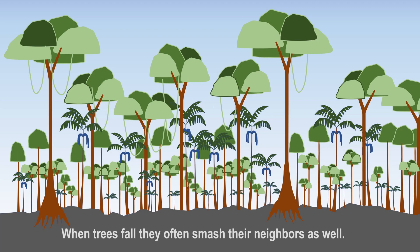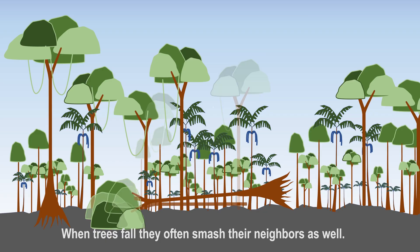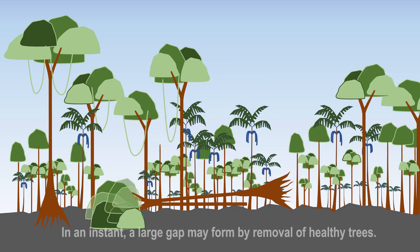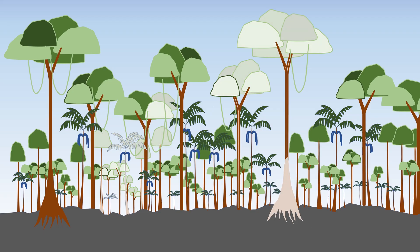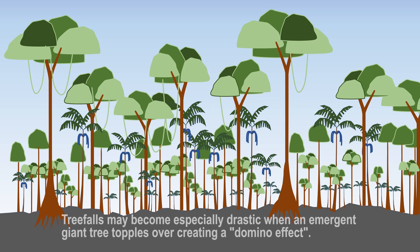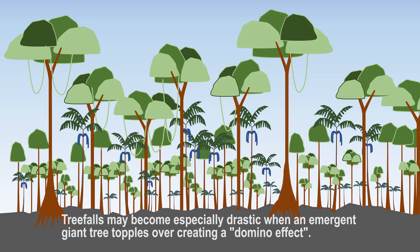When trees fall, they often smash their neighbours as well. In an instant, a large gap may form by removal of many healthy trees. The toppling of a large emergent tree can induce a domino effect, leading to significant tree mortality.